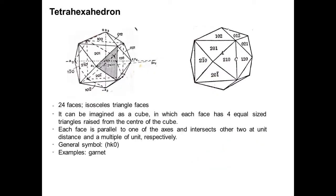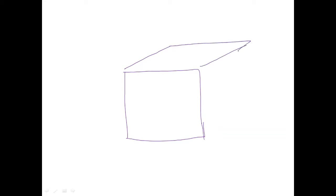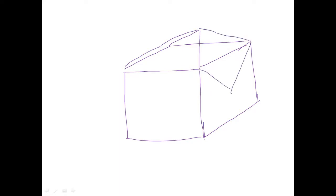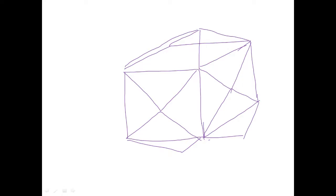Next is the tetra hexahedron. As the name suggests, it has 24 faces with isosceles triangular faces. To draw it, you start with a cube and from each square face draw four isosceles triangles — two in front and two behind — giving 24 faces in total.